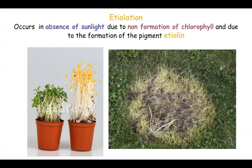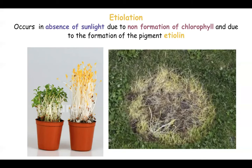You can observe etiolation in a grassy patch where a small rock is covering a piece of grass. Remove the rock and you will notice that the grass underneath has turned yellowish — this is due to etiolation. Etiolation is a process which reduces the synthesis of chlorophyll and therefore the capacity of a plant to perform photosynthesis. Ultimately, etiolation will lead to the death of a plant.